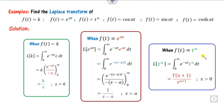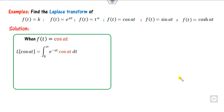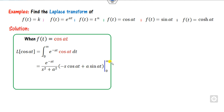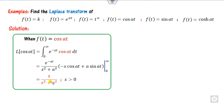You can find the Laplace transformation of polynomials t^n using the gamma function. The general rule is that the integral of e^(-ex) gives the gamma function of n. The coefficient of t is s, so the result involves gamma(n+1) divided by s raised to the appropriate power. Integrating by parts and substituting infinity gives 0 provided s is greater than 0. You can use L'Hôpital's rule to evaluate the limit and obtain the result.